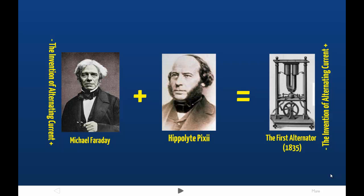In 1831, the great naturalist Michael Faraday discovered the electromagnetic properties of induction and inductance. Basically, what these properties show us is that an electric current moving through a circuit creates a magnetic field. It also shows that the reverse is true: a changing magnetic field produces electricity in an electric circuit.